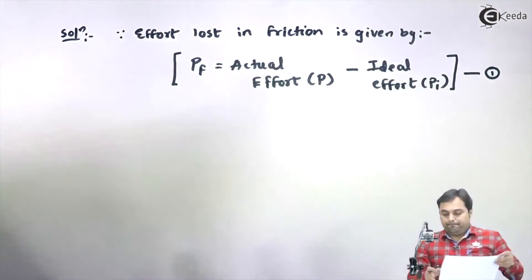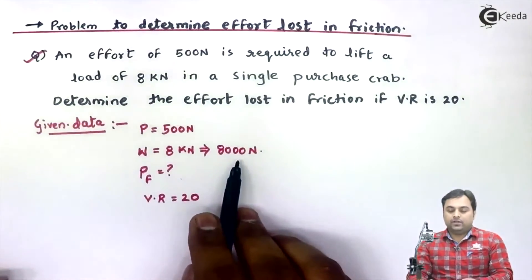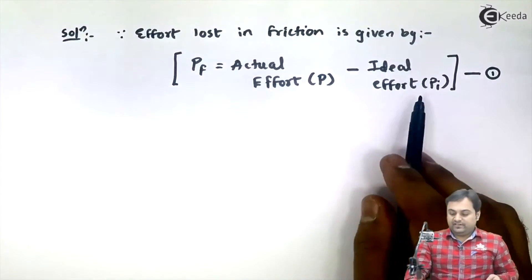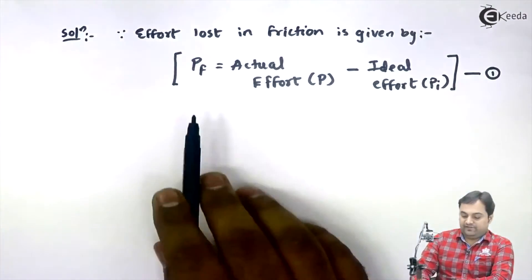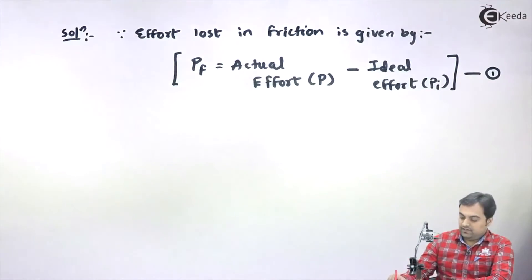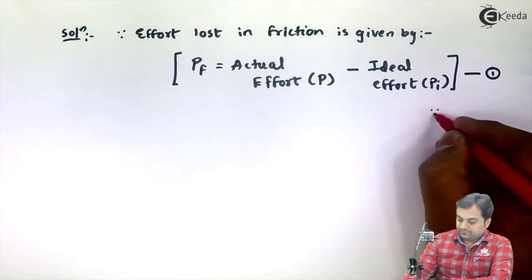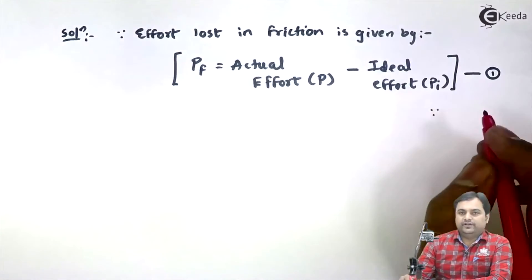If I look into the problem, actual effort is given to us. If I can calculate ideal effort, then we can find out effort lost in friction. So here I'll use this concept that since we want ideal effort, ideal effort will be there in case of ideal machine.